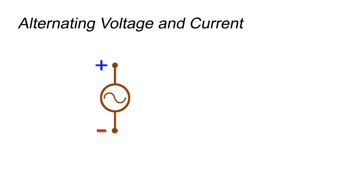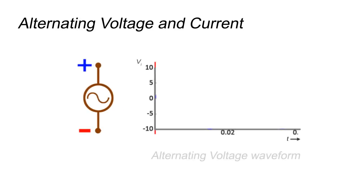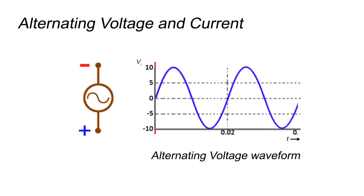If we plot waveform of this voltage by drawing magnitude of voltage on y-axis with respect to time on x-axis, we will find that the waveform is sinusoidal in nature.